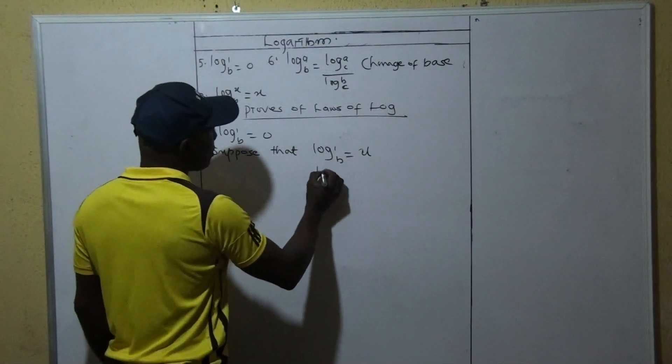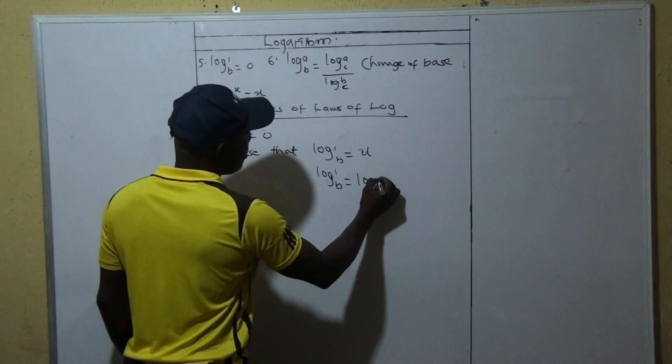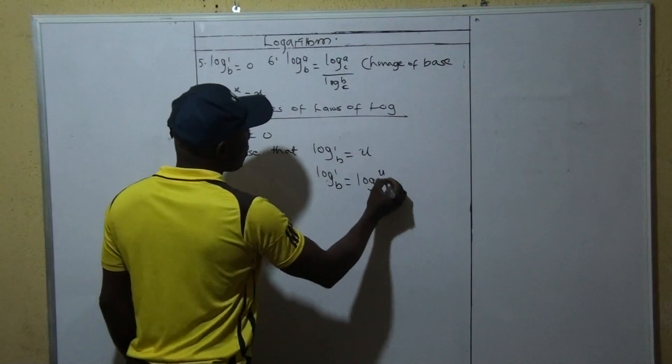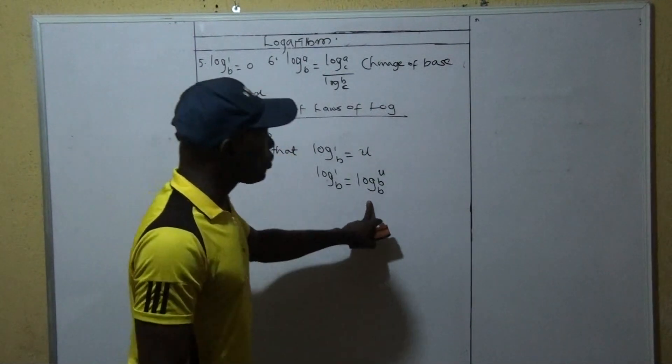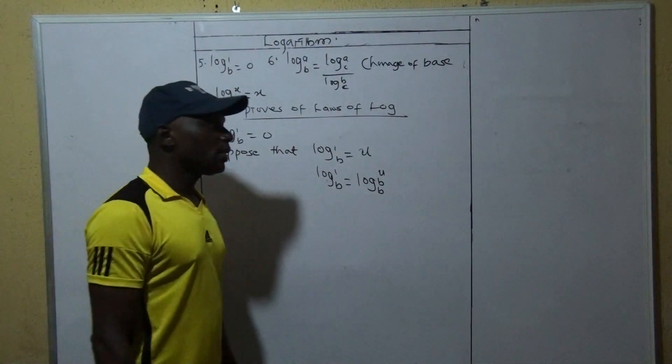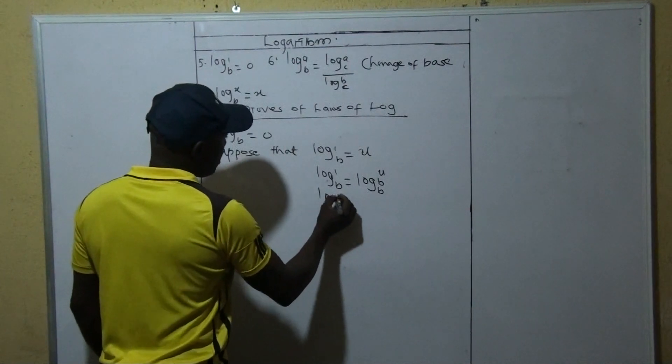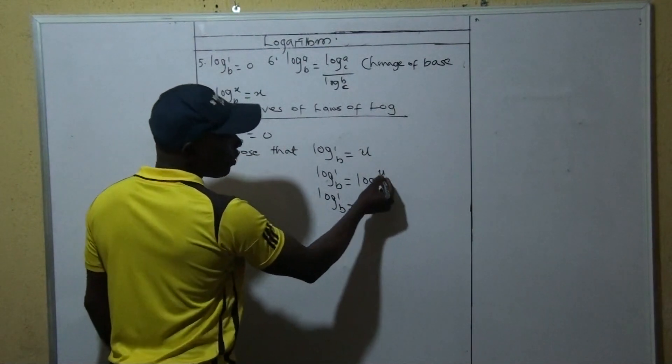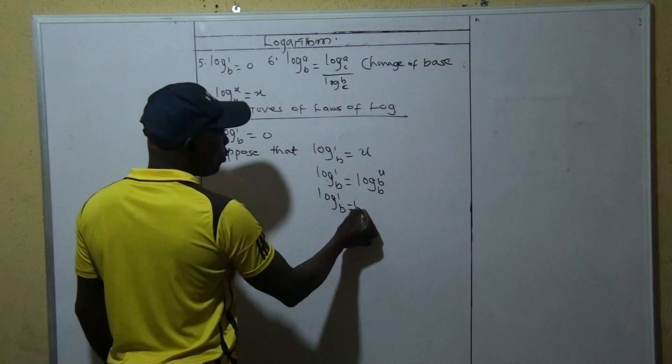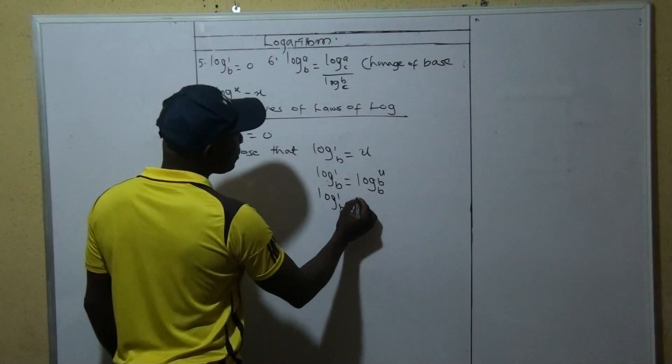And since this one is 1, we can say that this is log 1 to base B is equal to log B to base B raised to U, because B to power 0 is 1, and 1 times U is U. So here we say log 1 to base B is equal to, from one of the laws, you bring it, and this will become log B to base B raised to U.